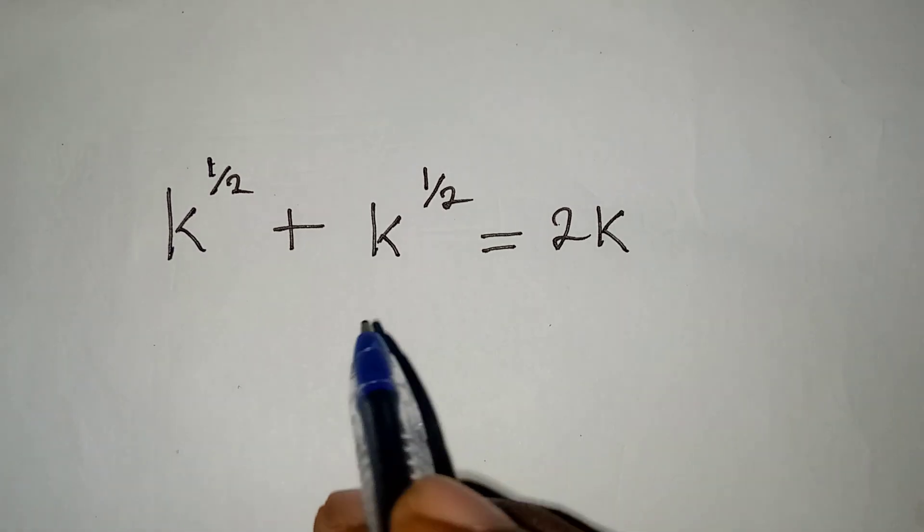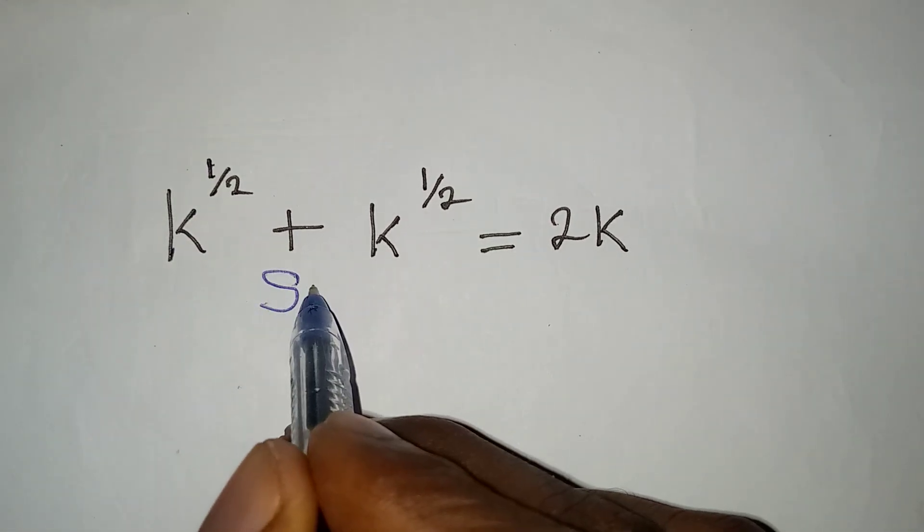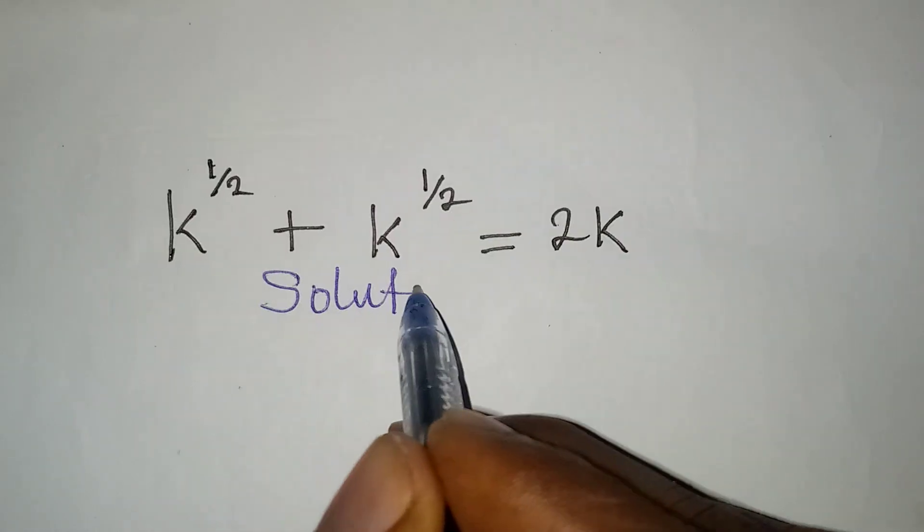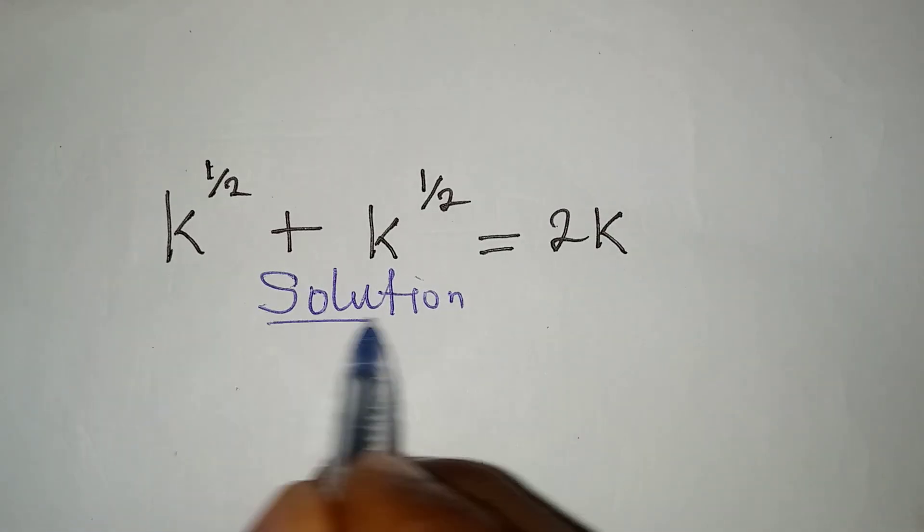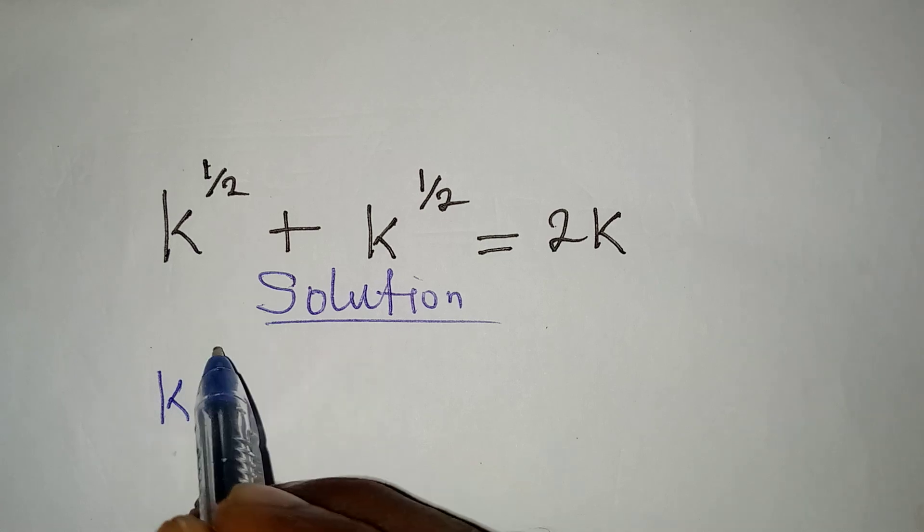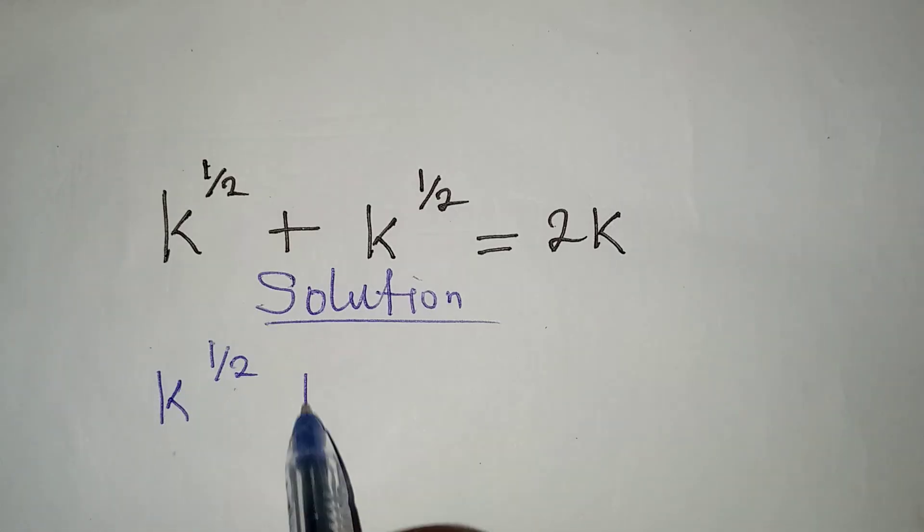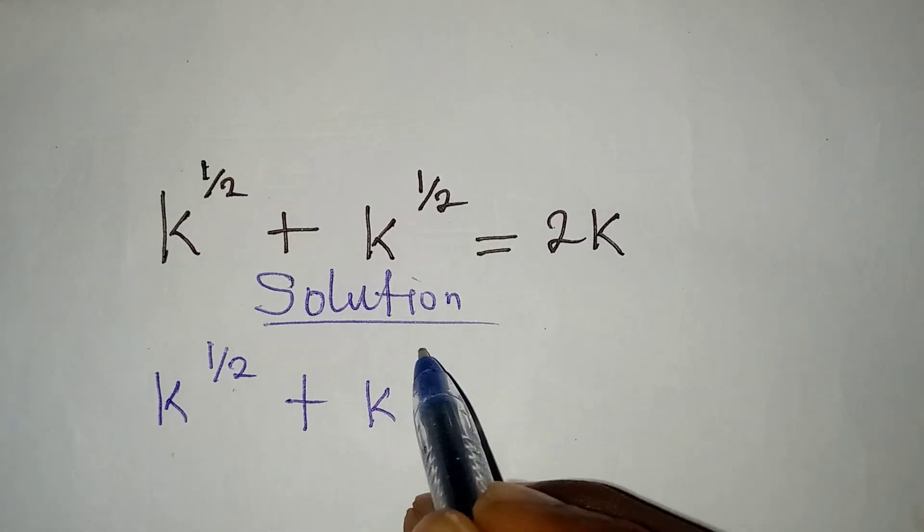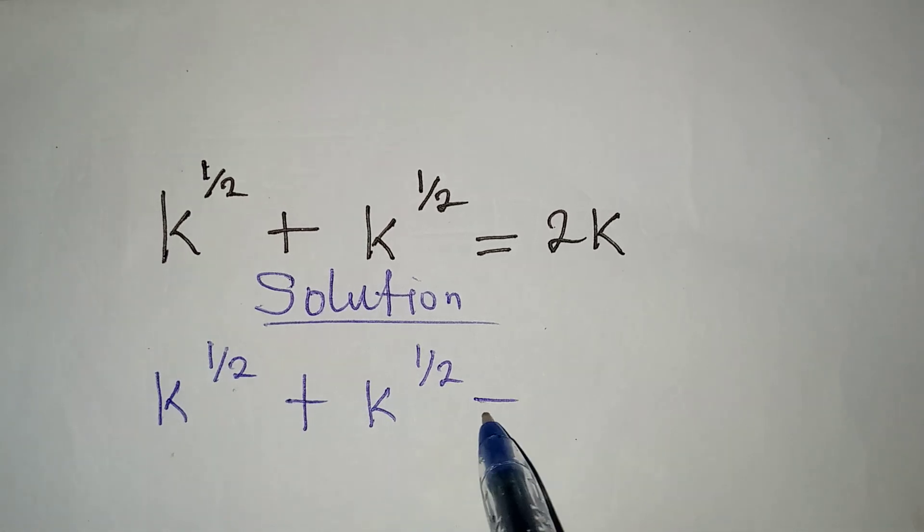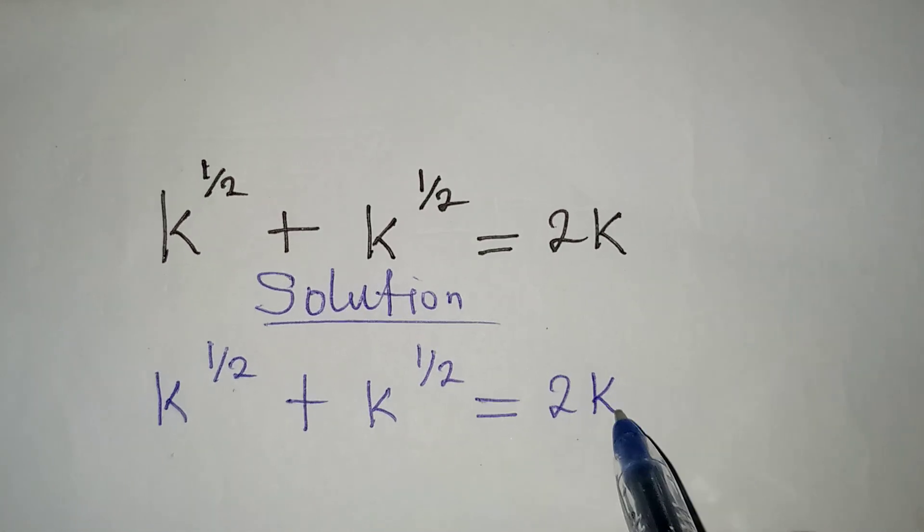Hello everyone, let's solve this problem very quickly. We have k to the power of 1 over 2 plus k to the power of 1 over 2 equal to 2k, and because we are to solve this, it means we should find the value of k.